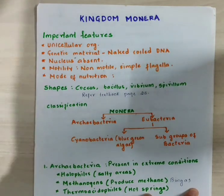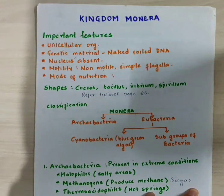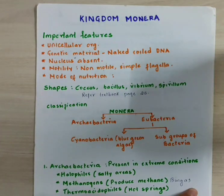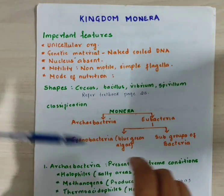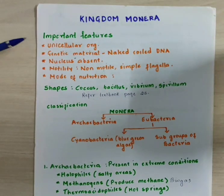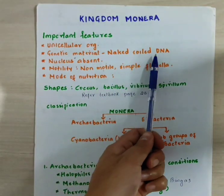I have highlighted some of the important features. These are the features which we already written down in the previous class. So let's see Kingdom Monera — they are unicellular, meaning they are single-celled. Their genetic material is DNA.